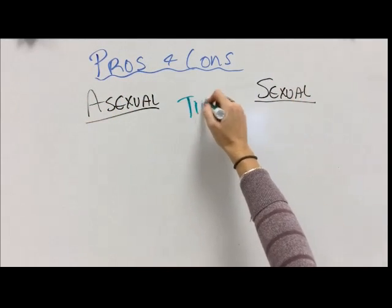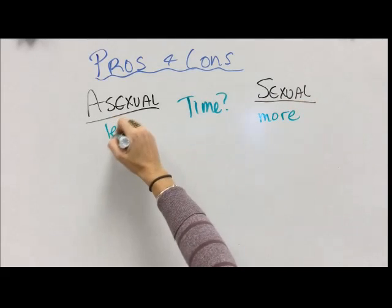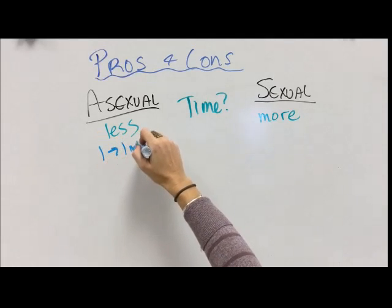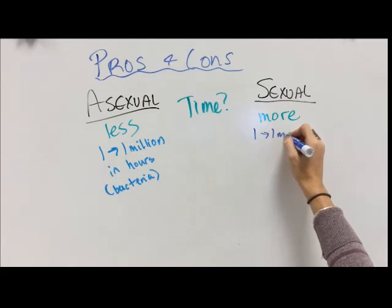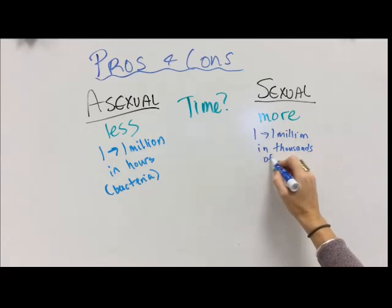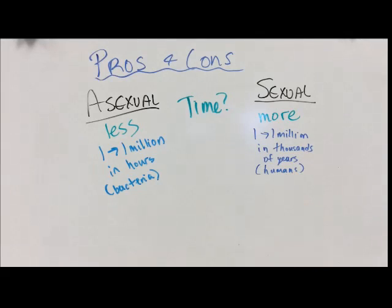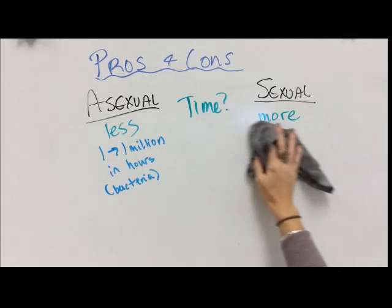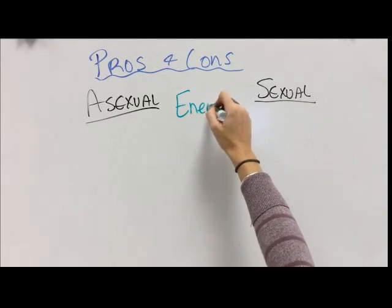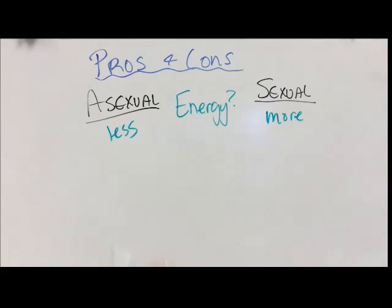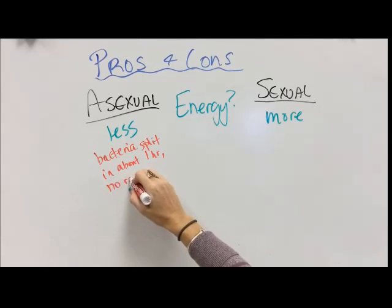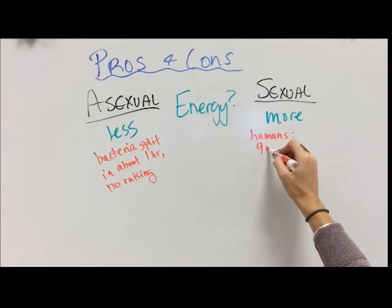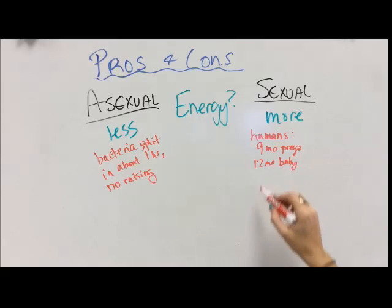Everything in life has pros and cons, so let's talk about the good and bad of asexual and sexual reproduction. In terms of time, sexual reproduction takes more time and asexual takes less. One bacterium can become a million in just a few hours, but to go from one to one million humans takes thousands of years, because the time between one person being able to make another is like 15, 20, 25, or 30 years. As for energy, sexual reproduction takes more energy. Bacteria can split in about an hour and don't have to raise their children, whereas humans take about nine months of pregnancy and then the rest of forever their kids need things.